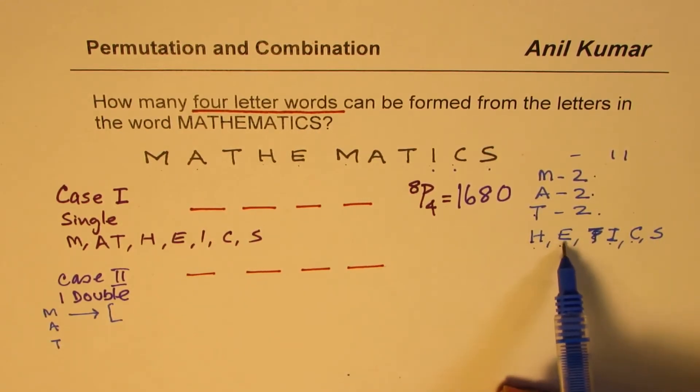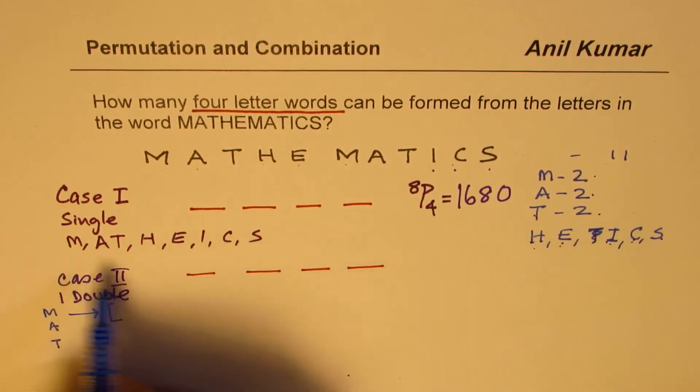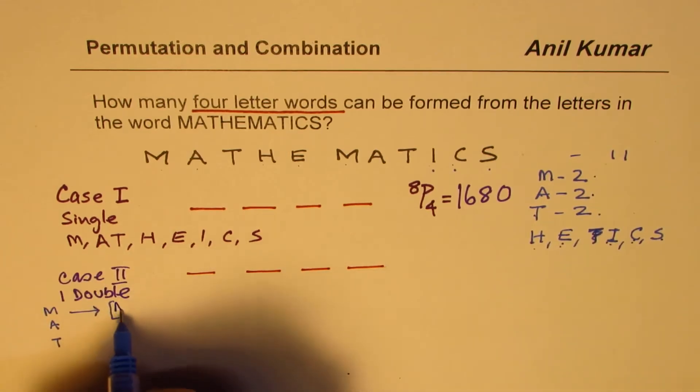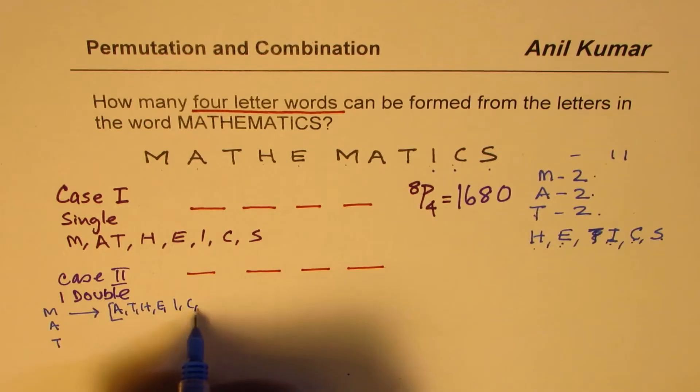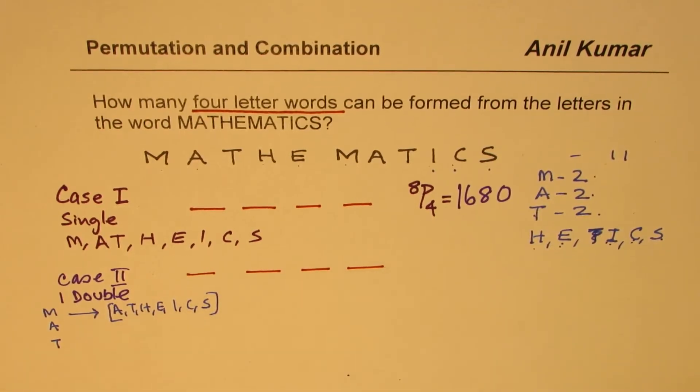Now if we take M as a double, in that case, how many other letters are there? So in all how many others? So one, two, three, four, five, six, seven. So we have in all other letters as seven. I mean if I take away M, we have A, T, H, E, I, C and S. These seven letters. Perfect.